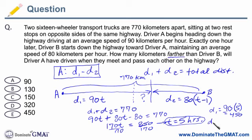And then driver two's distance is 80T minus one. Well, T is five, but minus one, so that means it's 80 times four. So that is 320, right? Because eight times four is 32, add the zero, 320.